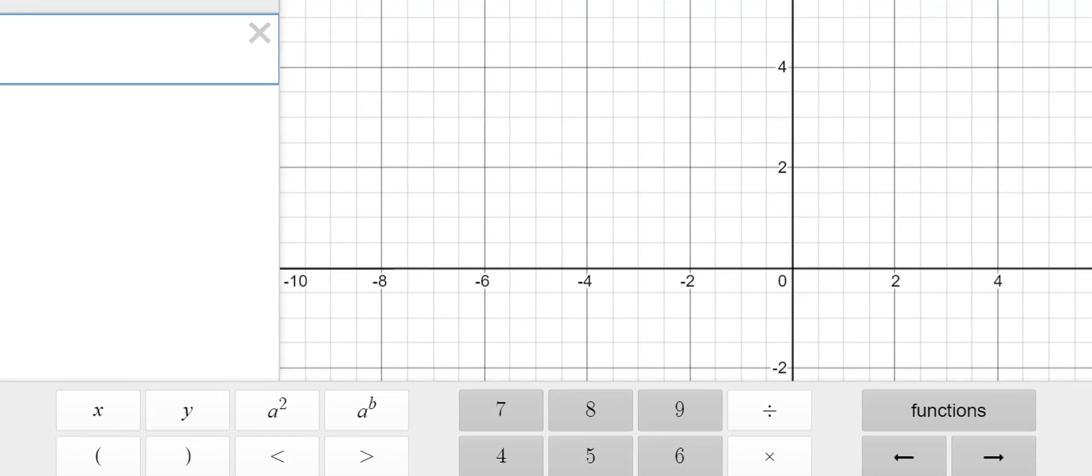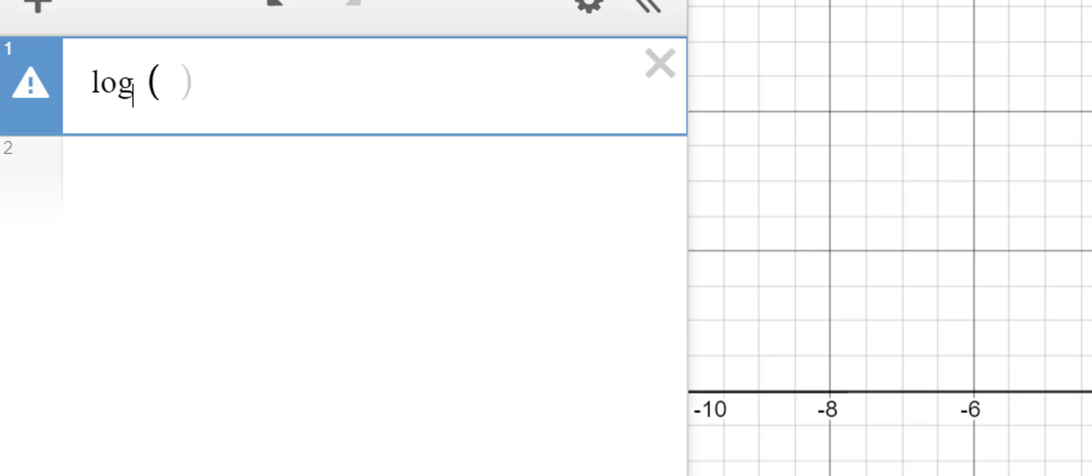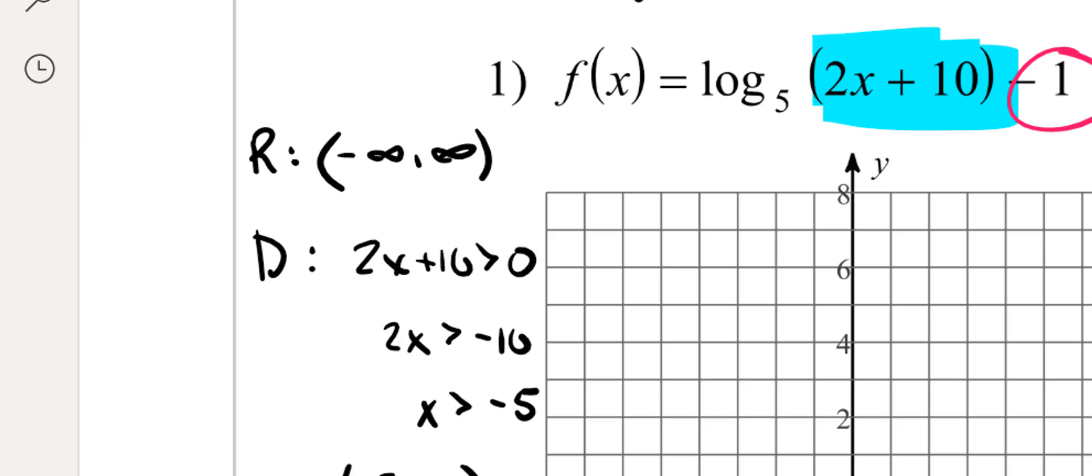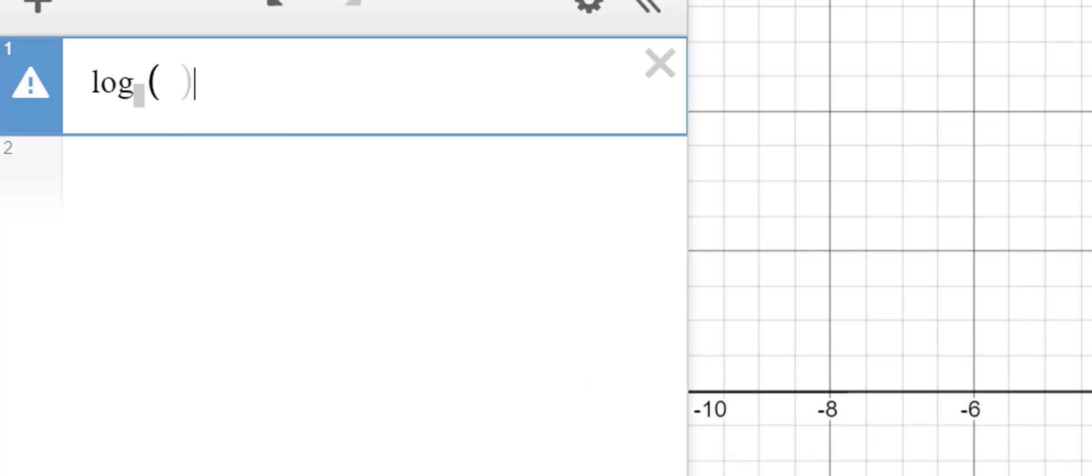So then where the cursor is blinking, you'll notice that is the base that we'll have. And in this one, our base was 5, so we'll go ahead and put the 5 there.